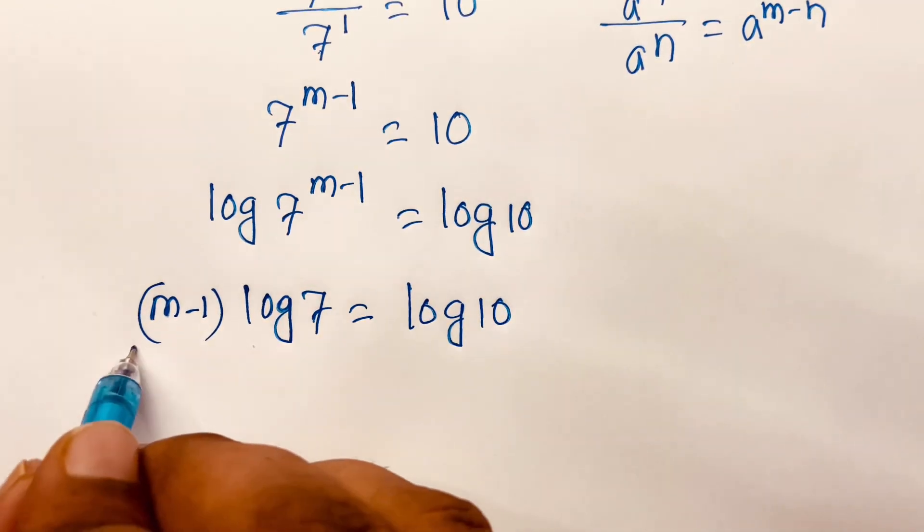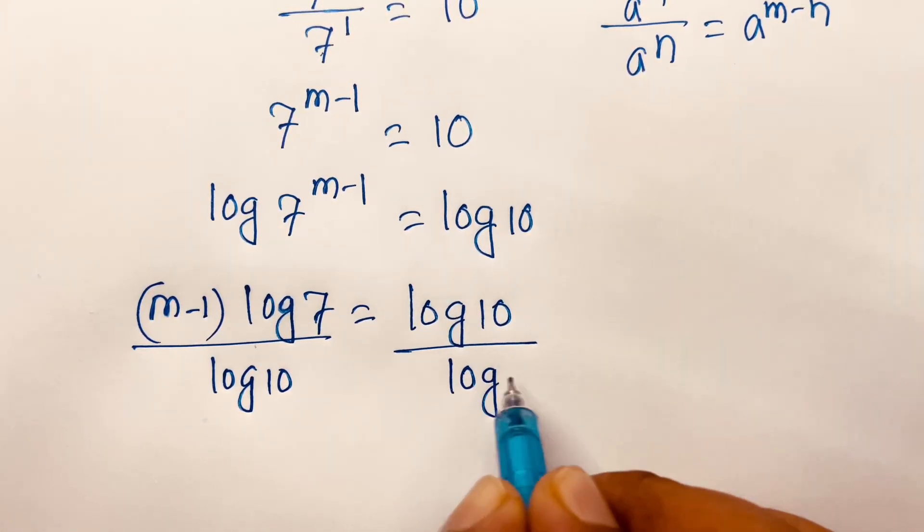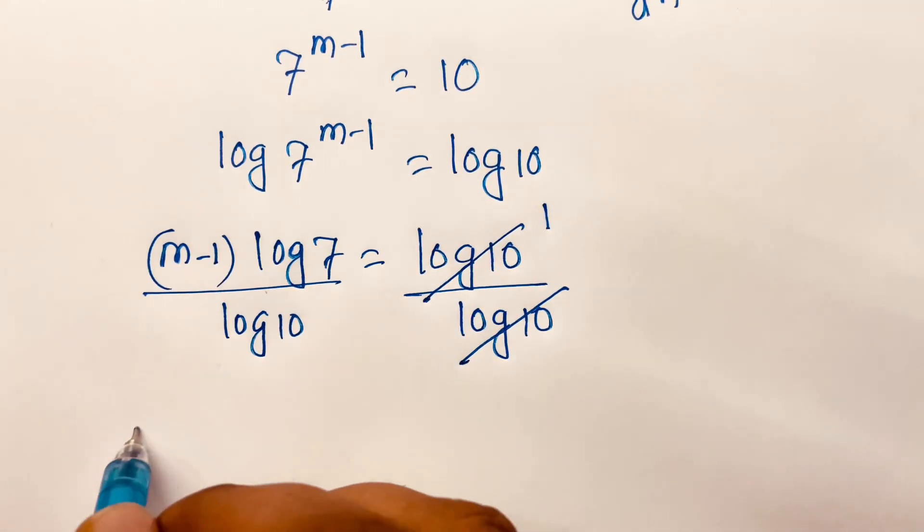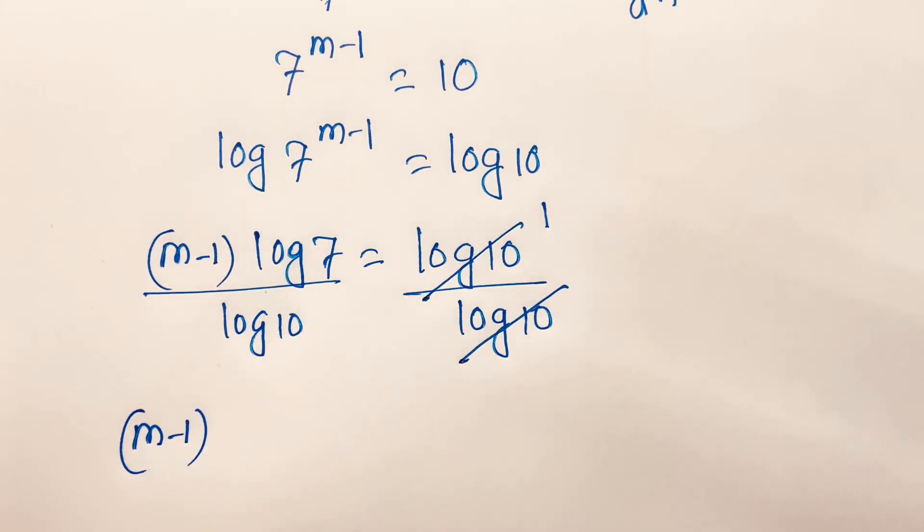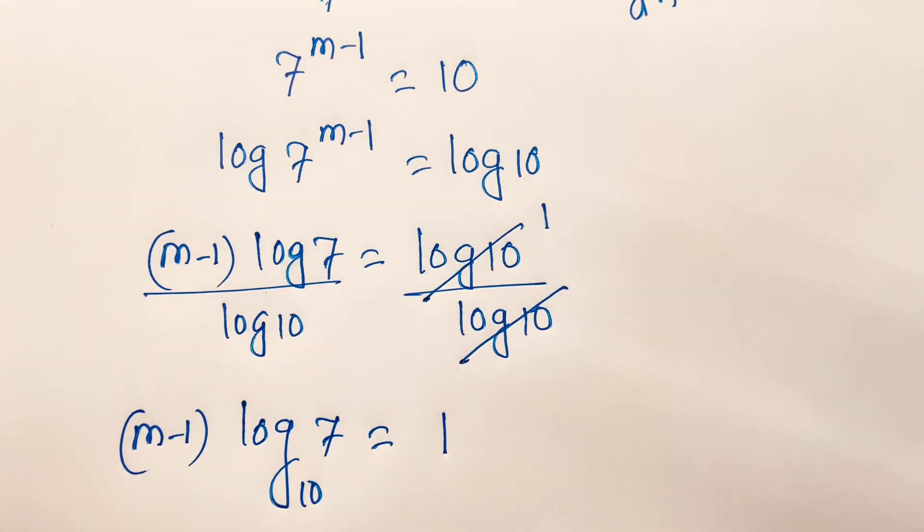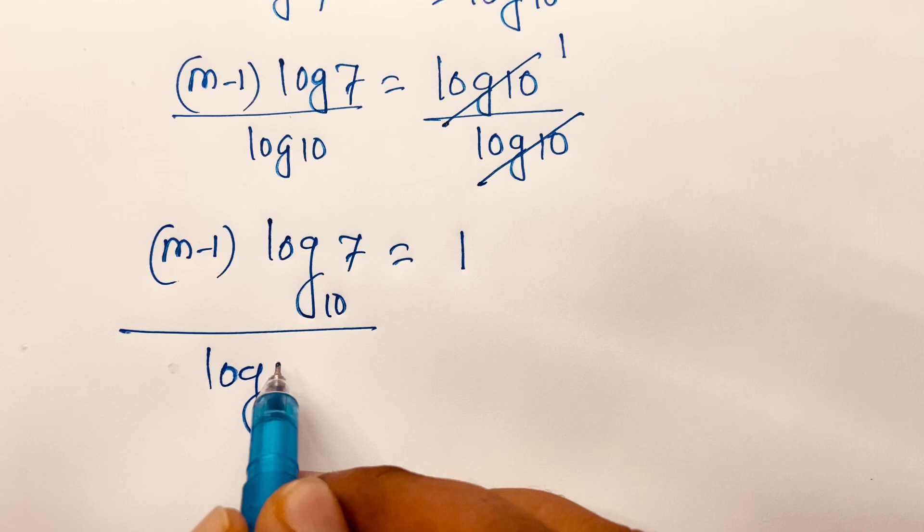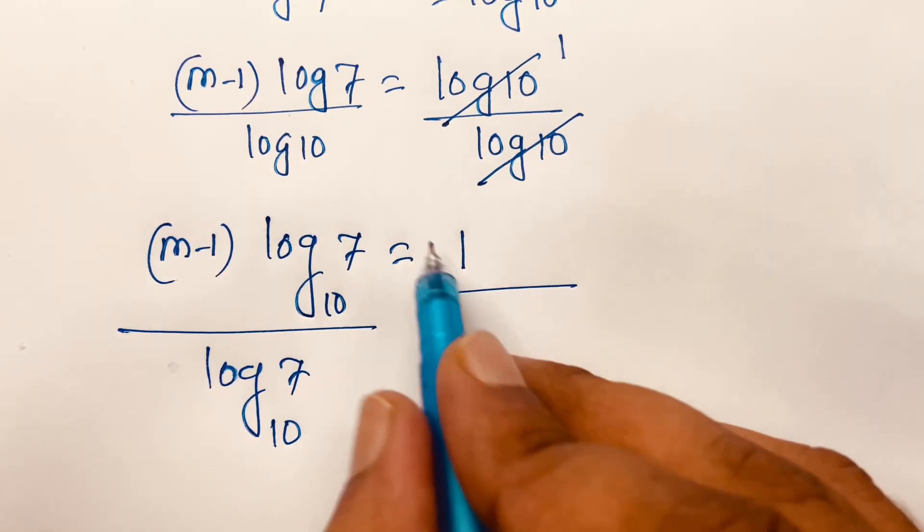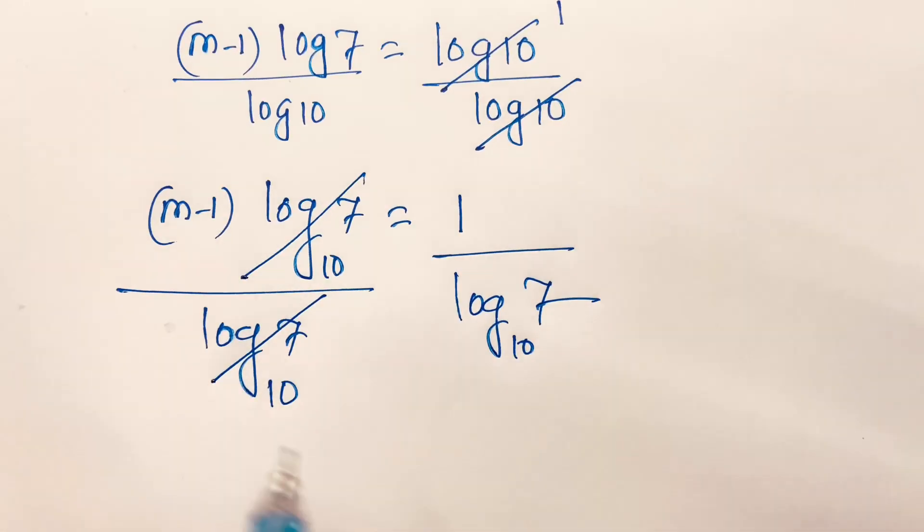Then I divide both sides by log 10. This cancels, and we'll find m-1 = 1/log₁₀(7).